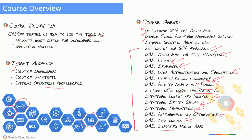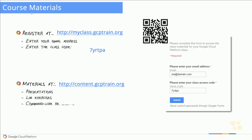Let me walk you through how you can register for this course and get access to the official Google course materials. If you sign in at myclass.gcptrain.org, you'll be presented with a page where you fill in your email address and enter the code 7yrtpa. That will open up the official CPD 200 course materials for you.